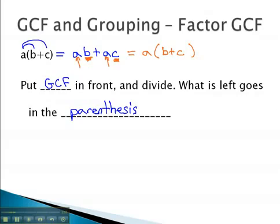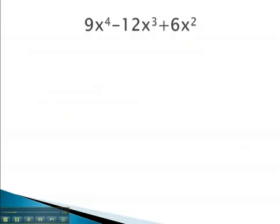Let's take a look at some examples that are a little more interesting, where we find the GCF and put it in front of the parentheses to factor. In this problem, we see that 9, 12, and 6 are all divisible by 3. All the terms also have an x, and the lowest exponent is squared. 3x squared is the greatest common factor, which will go in front of the parentheses.